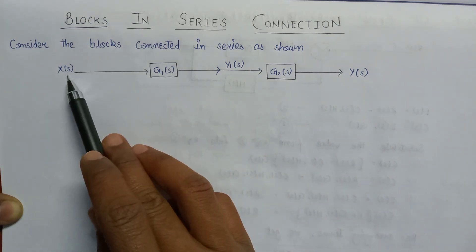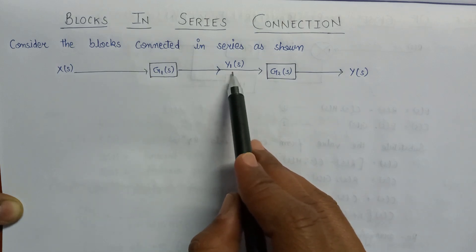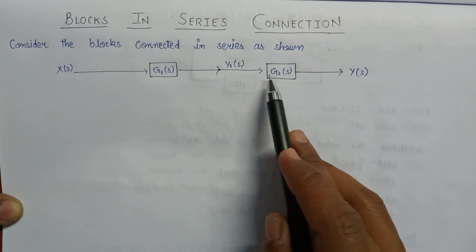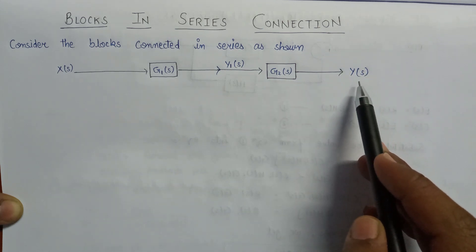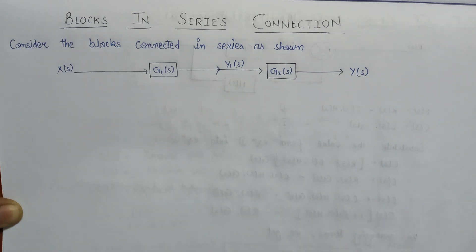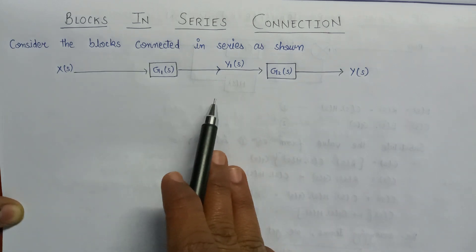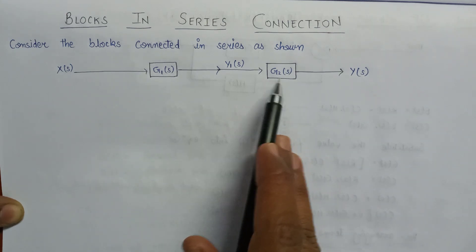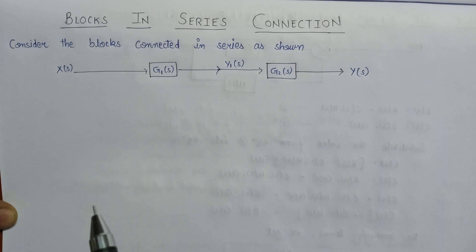Here the input X(s) is applied into the first block and we get the output Y1(s). Y1(s) is also applied as an input to the second block and we finally get an output equal to Y(s). By observing this block diagram, we can say that G1(s) and G2(s) are connected in series, and if we want to calculate the open loop transfer function, then it will be equal to...